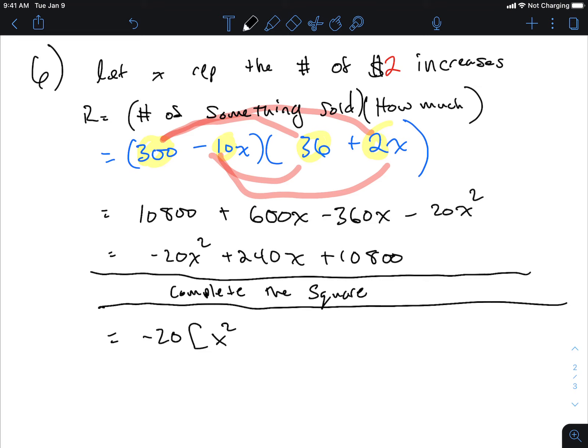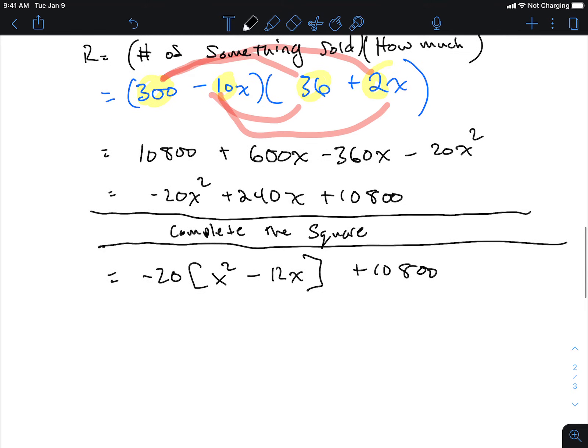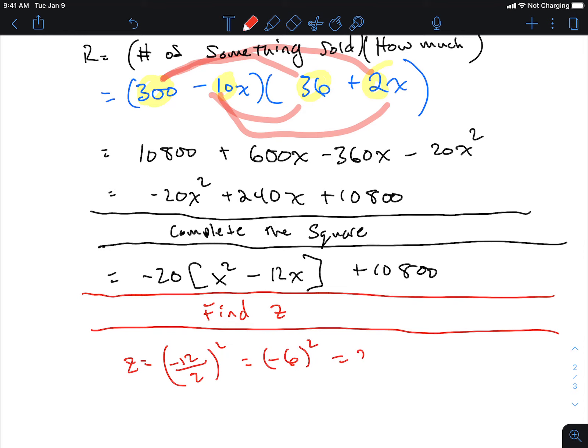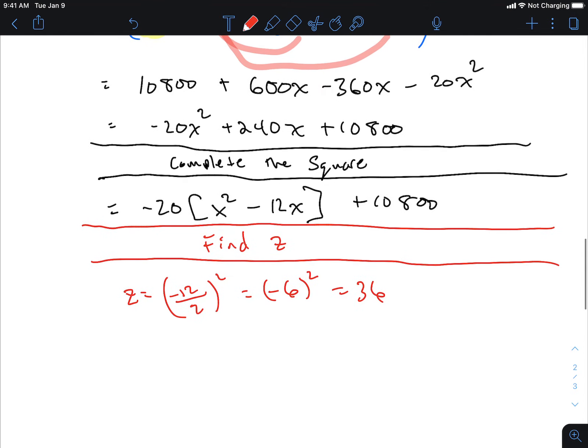What's 240 divided by 20? 12. Find z. Take a little break. Find z. z equals negative 12 divided by 2, squared is equal to negative 6 squared, which is equal to 36. Go back to the equation.